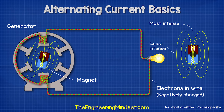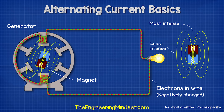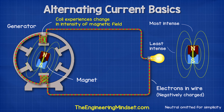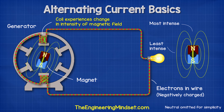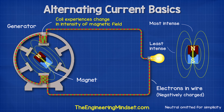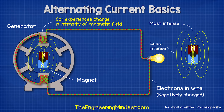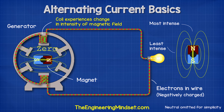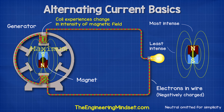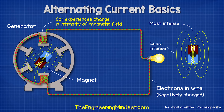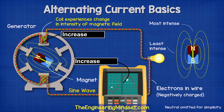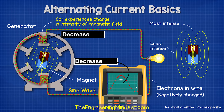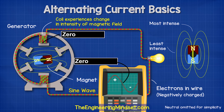The magnetic field of the magnet varies in intensity. So as the magnet rotates past the coil, the coil will experience a change in intensity of the magnetic field — from zero up to its maximum intensity, and then as it passes the coil, it will decrease again back to zero. Then the negative half comes in and pulls the electrons backwards with the same change in intensity. Each full rotation of the magnet will therefore produce this wave pattern known as a sine wave.